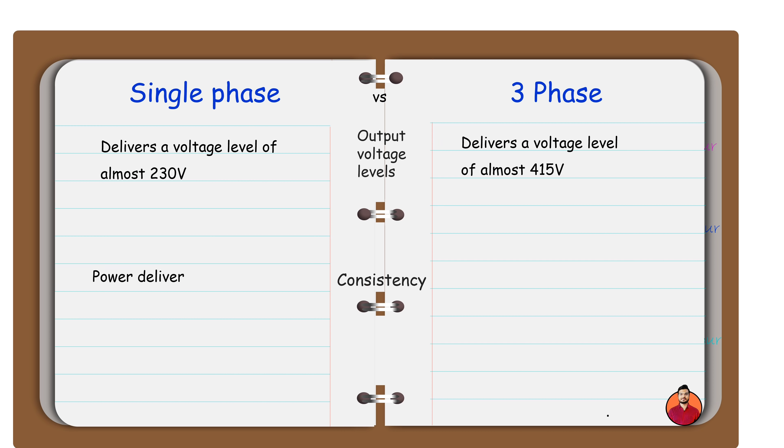The power delivery in single-phase supply is not consistent due to peaks and dips in voltage. Due to three conductors with 120 degrees phase difference, the power delivery in three-phase supply is always steady and consistent. The peaks and dips of the three AC signals are compensated by each other.